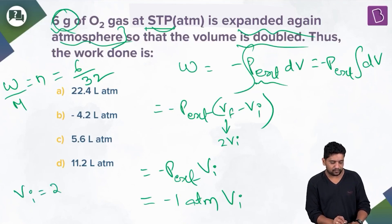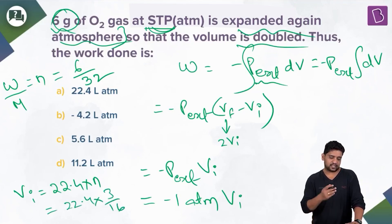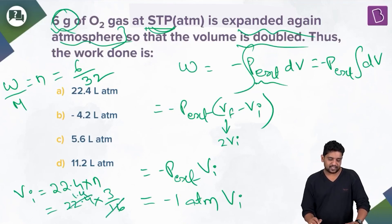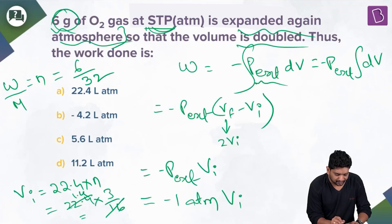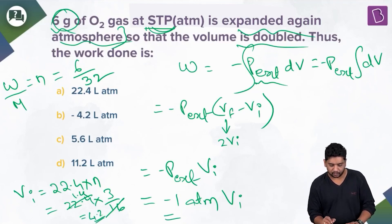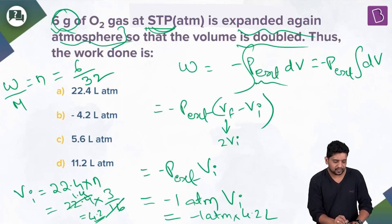Initial volume = 22.4 × (3/16) = 4.2 liters. Substituting: work done = −1 atm × 4.2 L = −4.2 L·atm. This matches option B.